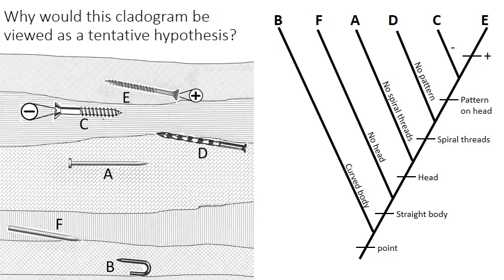Why would this cladogram be viewed as a tentative hypothesis? Even though this is a fictional example, if this were a real cladogram involving real animals or plants, cladograms are very much viewed as tentative hypotheses because of missing information — there are gaps in the fossil record and data we might be misinterpreting. So a cladogram is considered fluid; it can be adjusted and amended as more information is discovered. Hopefully these three examples of building cladograms were helpful. Thanks for watching.